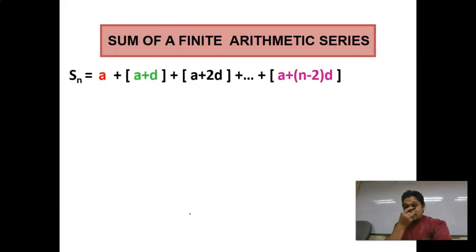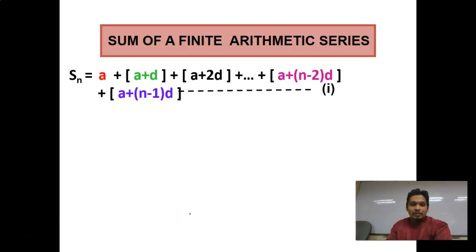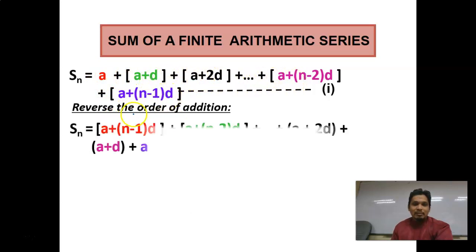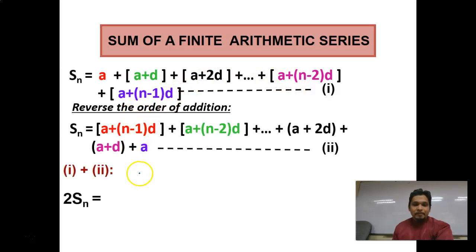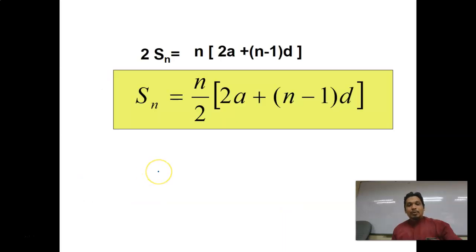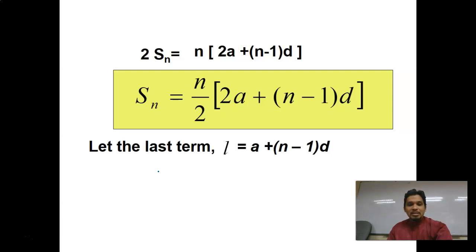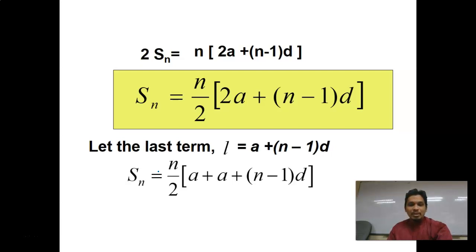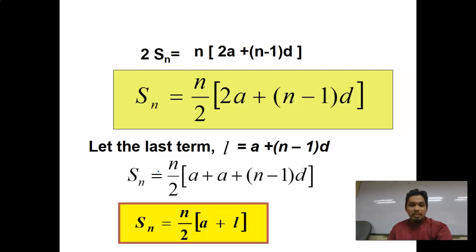Sum of a finite arithmetic series. The summation of all terms from first to nth term — reversing the order of addition — gives Sn = (N/2) × [2A + (N−1)D]. Letting the last term L = A + (N−1)D, this becomes Sn = (N/2) × (A + L), where L is the last term.